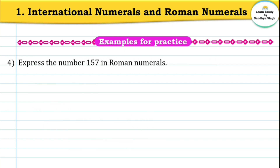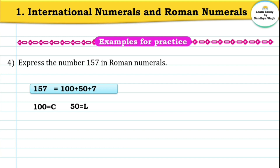Express the number 157 in Roman numerals. The expanded form of 157 is 100 plus 50 plus 7. Number 100 means C, number 50 means L — remember the LCD trick: L means 50, C means 100, D means 500, M means 1000. And 7 means 5 plus 2, so V followed by II, giving VII. Therefore 157 is written as CLVII in Roman numerals.